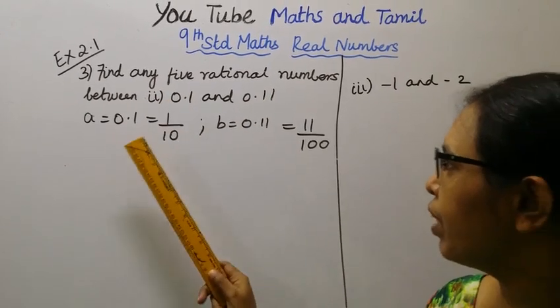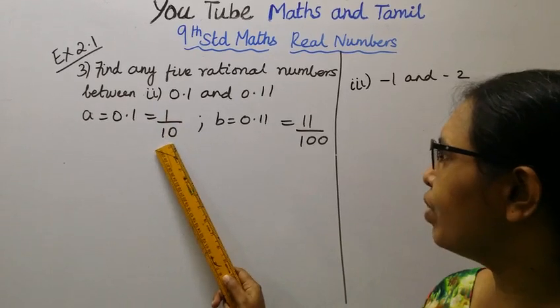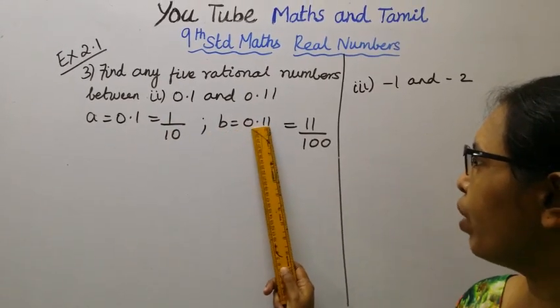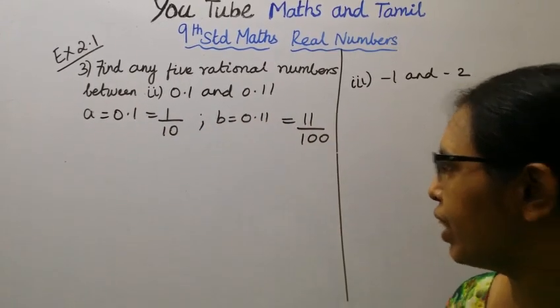Second subdivision. A: 0.1 which is 1 by 10 in fraction form. B: 0.11 which is 11 by 100 in fraction form.